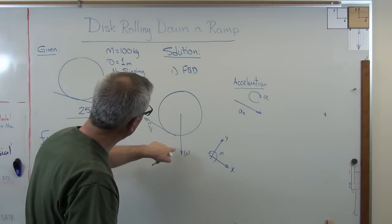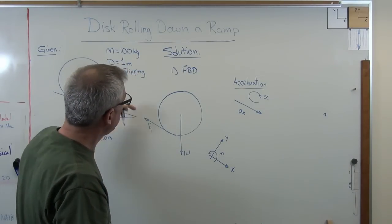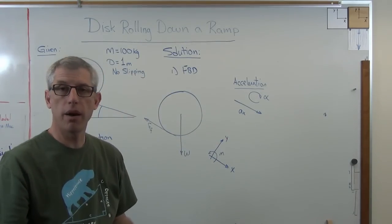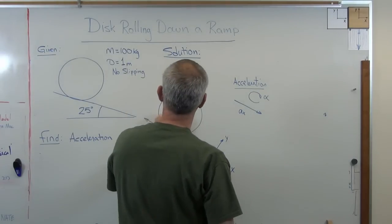So I've got weight, friction force. Now because I've got acceleration going that way, I can have the inertial force going this way.